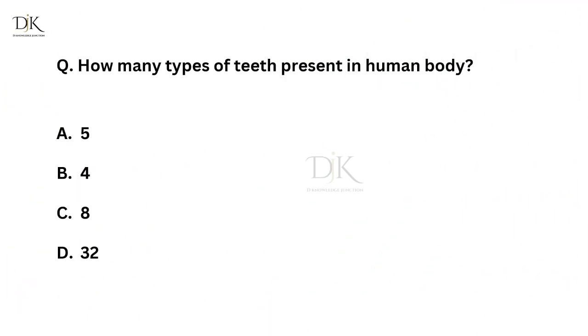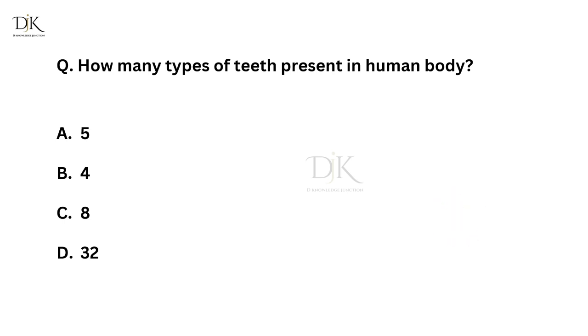How many types of teeth are present in the human body? Right answer is 4.